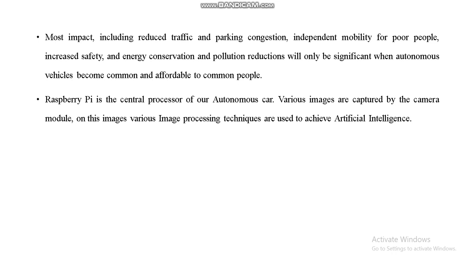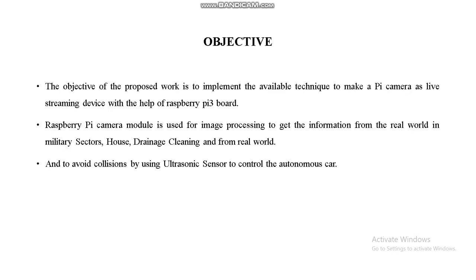When autonomous vehicles become common and affordable to the general public, they will increase safety, energy conservation, and pollution reduction. The main objective is using a Raspberry Pi camera module for image processing to get information from the real world — in military sectors, hose drainage cleaning — and to avoid collisions using ultrasonic sensors to control our autonomous car. Live streaming is also provided by the Raspberry Pi camera.